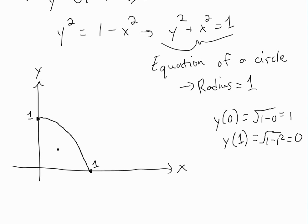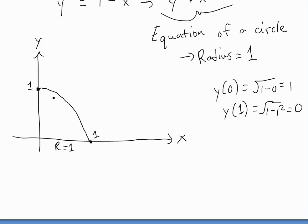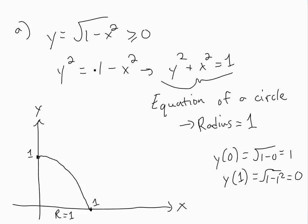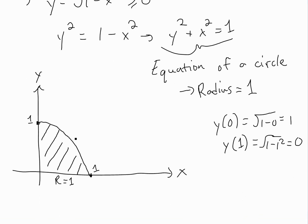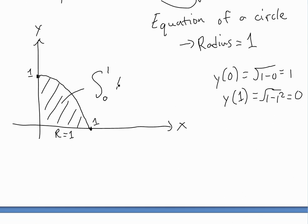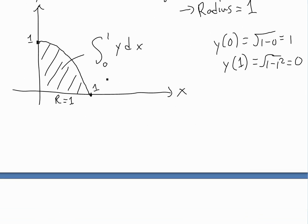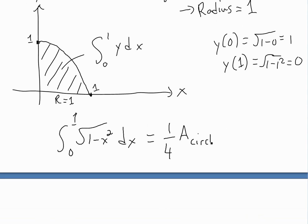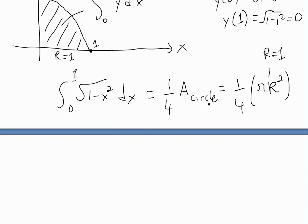The radius equals one and this is a quarter of a circle. The integral from zero to one of y dx is just the area under the curve, which equals one quarter of the area of a circle. The area of a circle is pi r squared, and r equals one, so the answer is pi over four. I'll do another video proving this once we develop more integration techniques.